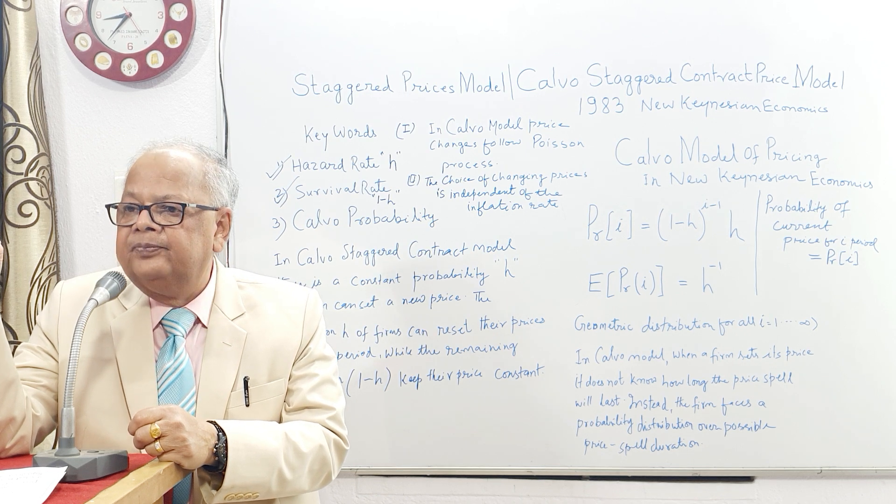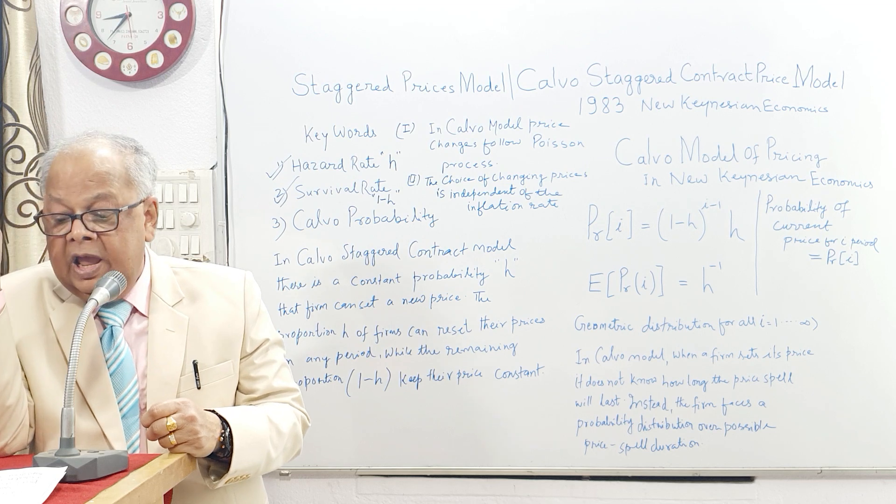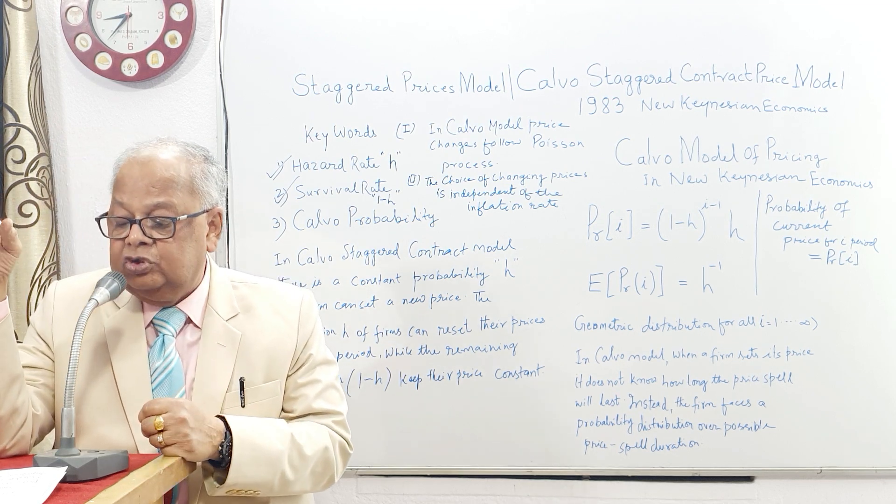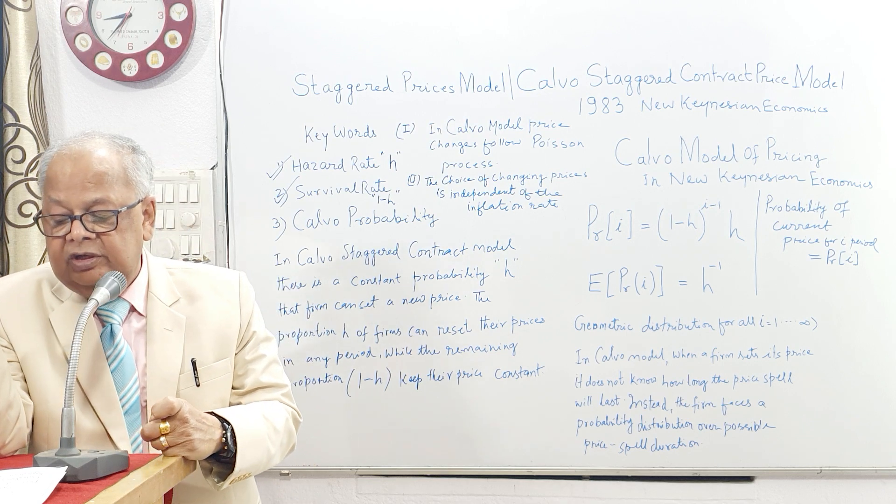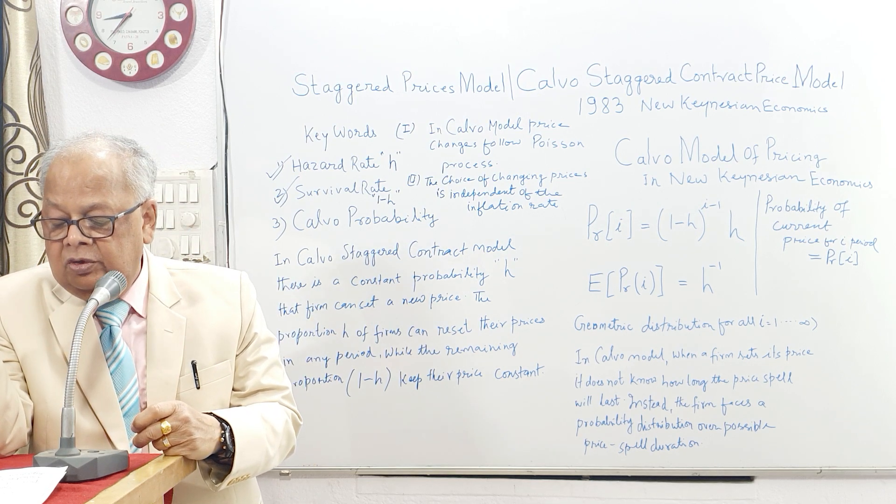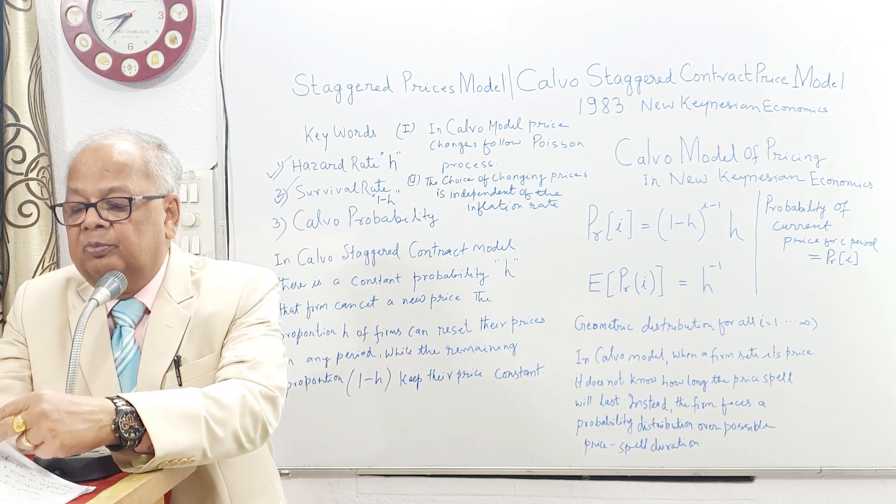The dynamic stochastic general equilibrium model developed, and Calvo model is the most common way to model nominal rigidity in New Keynesian economics. Therefore, we say that complete nominal rigidity...